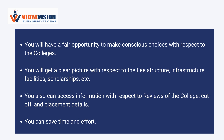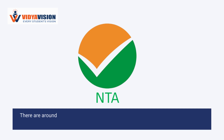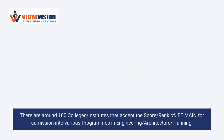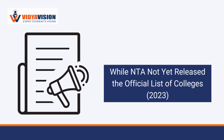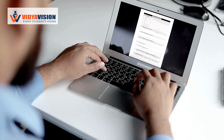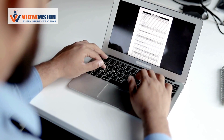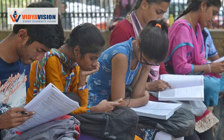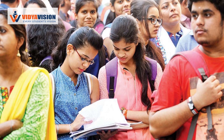You can save time and effort. There are around 100 participating institutes that accept the score and rank of JEE Main for admission into various programs in engineering, architecture, and planning. While NTA has not yet released the official list of colleges for 2023, candidates can view the list of participating institutes that accepted JEE Main scores for the previous year.